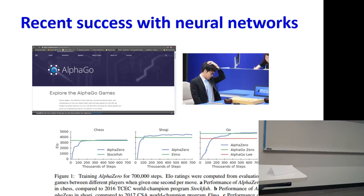It learns about the rules of the game. It learns to beat the current best system in chess, which is Stockfish, after about 300,000 steps. It learns to beat the current best system in Shogi after about 200,000 steps.